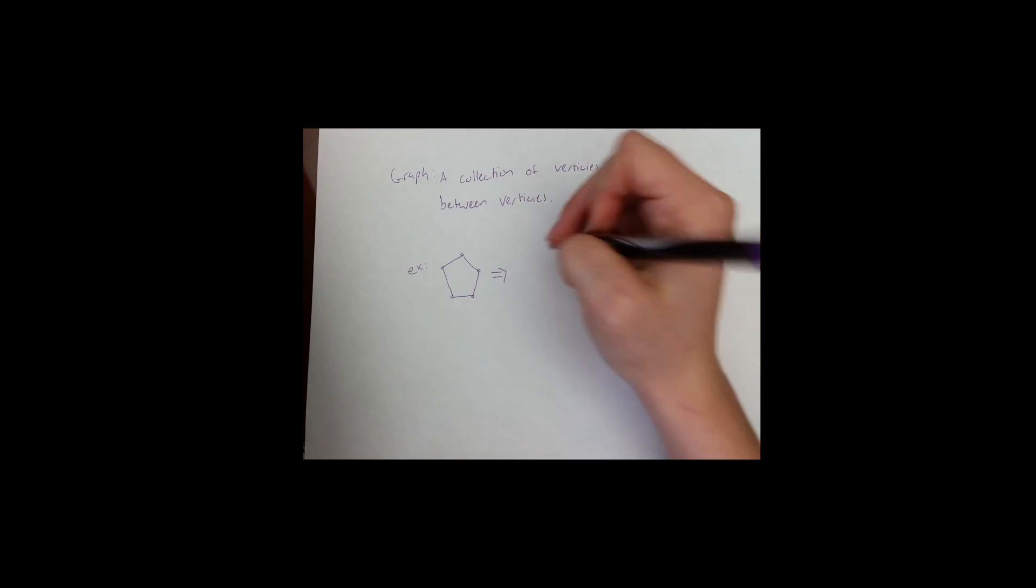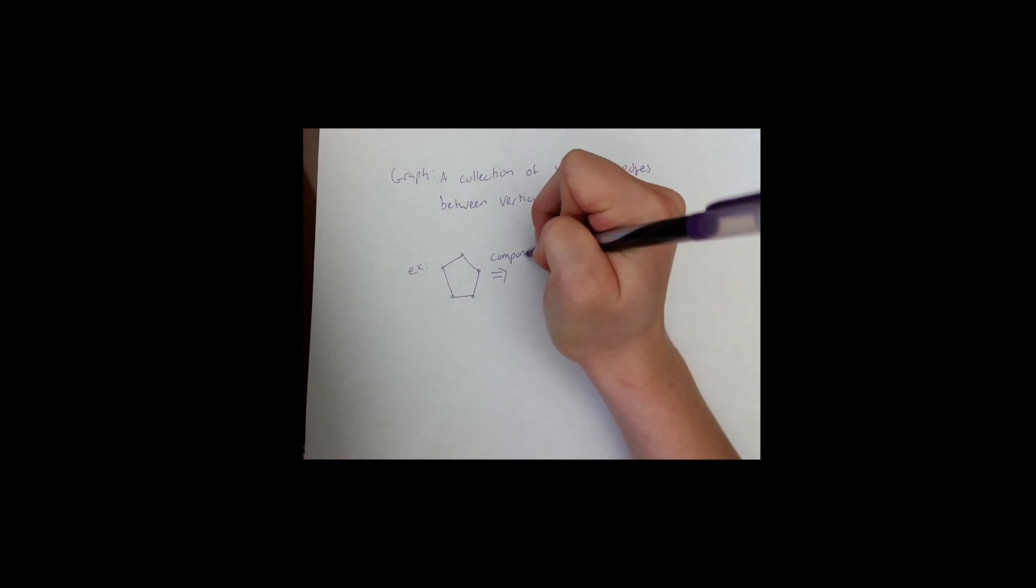Here we have drawn a graph of a pentagon. A component of a graph is a collection of edges and vertices such that you can trace a path to any other edge in the component, but you cannot trace a path to any vertices of another component. These are two components of the shown pentagon.